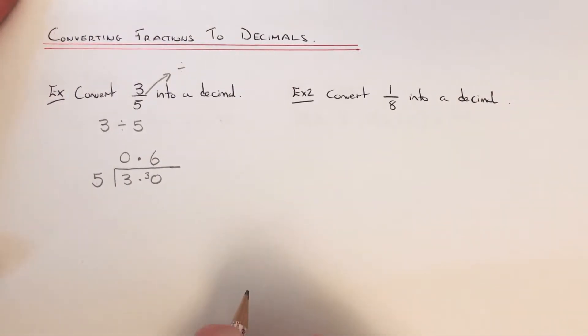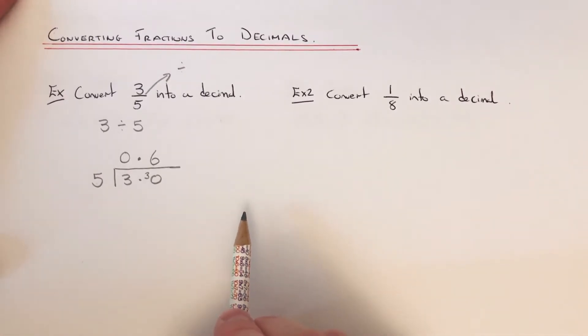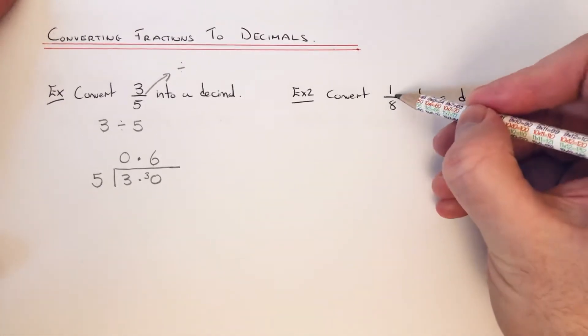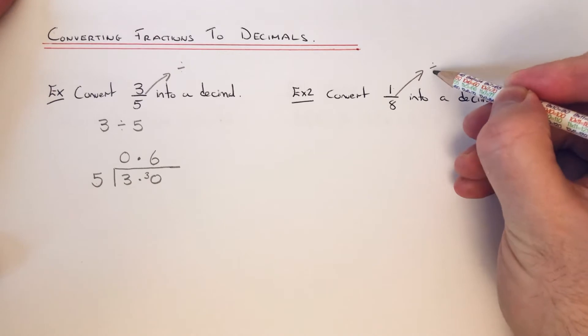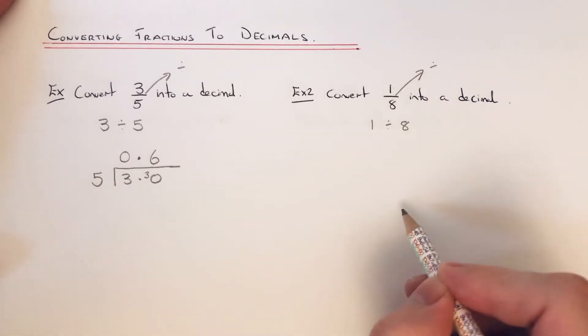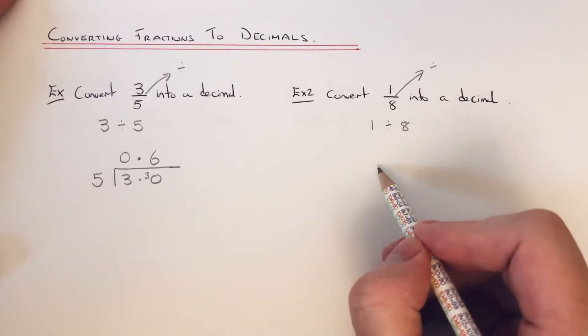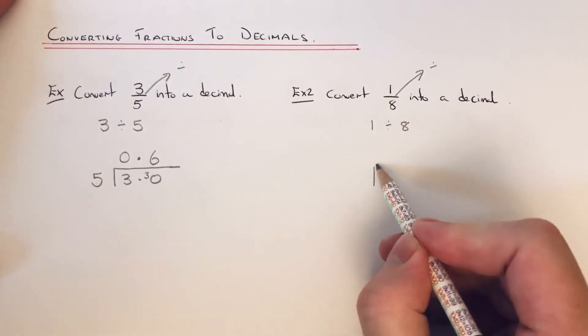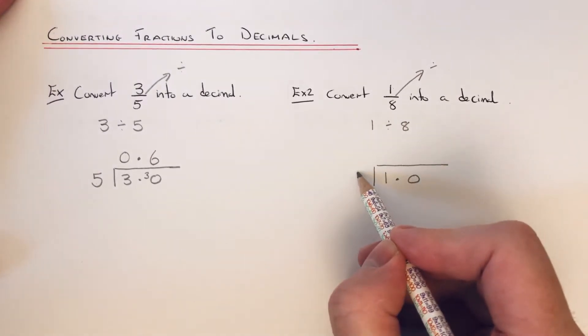Let's have a look at example 2. This time we've got to convert 1/8 into a decimal. Again, the line between the numerator and denominator means divide, so we just need to do 1 divided by 8. We're going to use short division to do this, so we can write the 1 as 1.0, and we're going to divide that by 8.